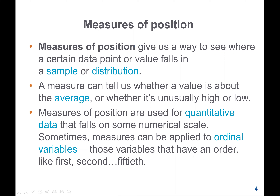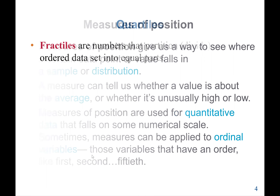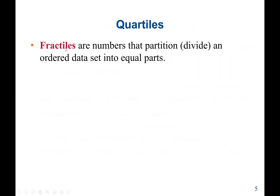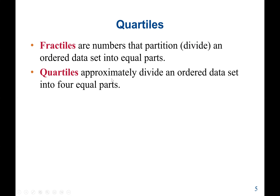The measures of position are used for quantitative data that falls on some numerical scale. Sometimes the measures can also be applied to ordinal variables — those variables that have an order such as first, second, third, etc. So what is a fractile? Fractiles are numbers that partition or divide an ordered data set into equal parts, and that gives us the concept of finding the quartiles. The quartiles approximately divide an ordered data set into four equal parts.